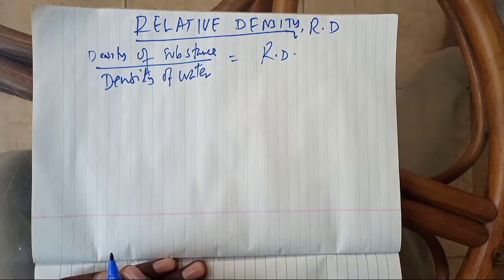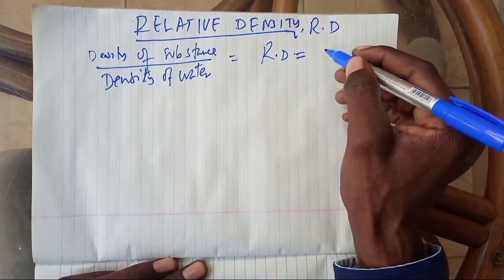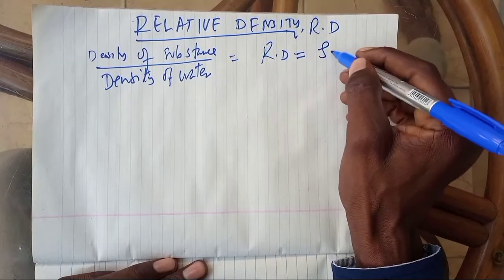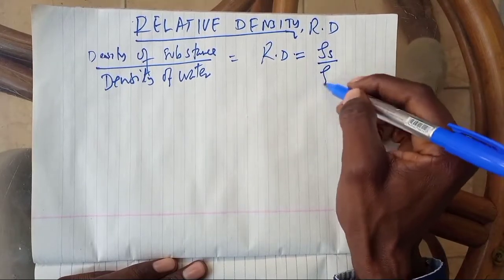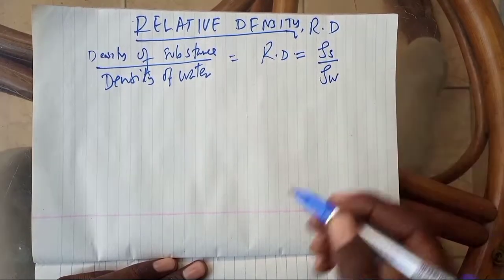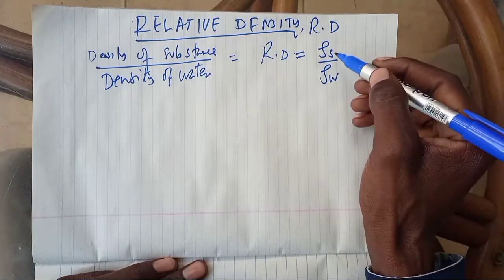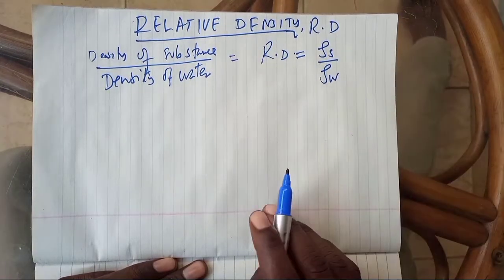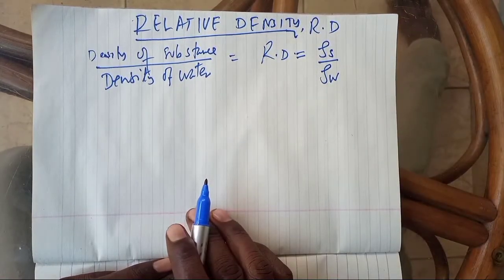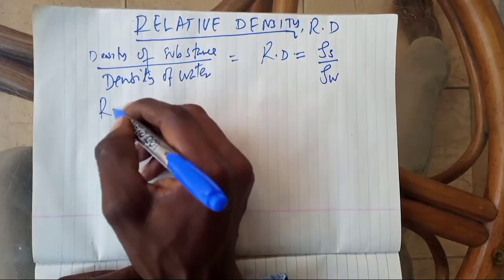Kwa relative density ni sawasawa na density ya kitu unagawanya kwa density ya maji. Kwa maana hiyo, density ya substance ukigawanya na density ya water, ndio unapata kitu ambayo tunaitwa relative density.